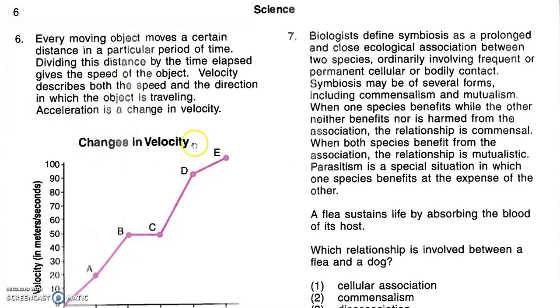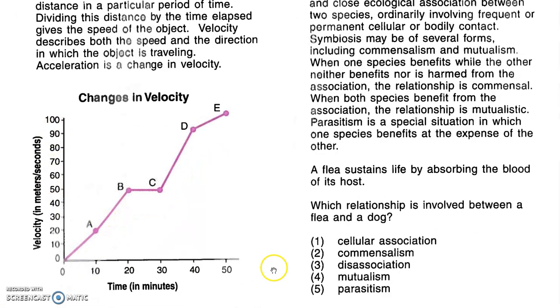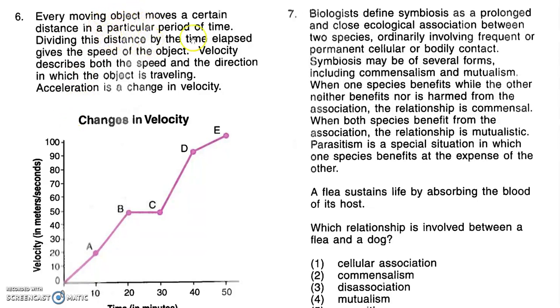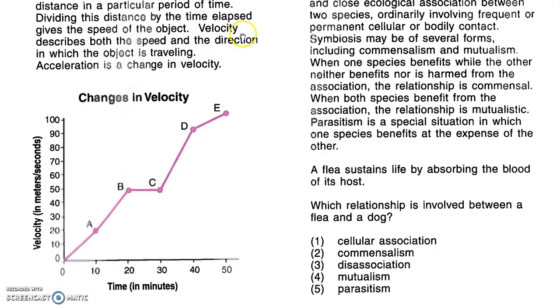Let's have a look at the graph. Changes in velocity. The combination of both y and x-axis will give us the acceleration of an object. On the y-axis we have the velocity in meters per second. Speed is distance divided by time elapsed. Same velocity, just that velocity has a specific direction. And on the x-axis we have the time in minutes.